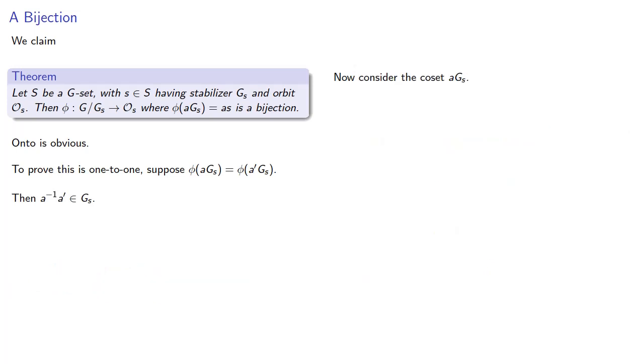Now consider the coset aG_s. Since a inverse a' is an element of our stabilizer, then a times a inverse a' is an element of our coset. But a times a inverse a' is a', so a' is an element of our coset. And since a' is in our coset, then our two cosets must be the same coset. And our function Phi is a one to one function.